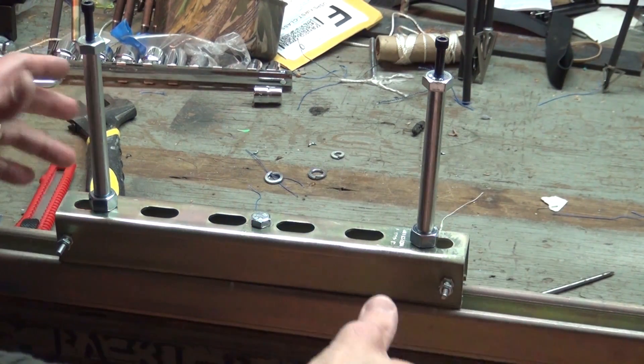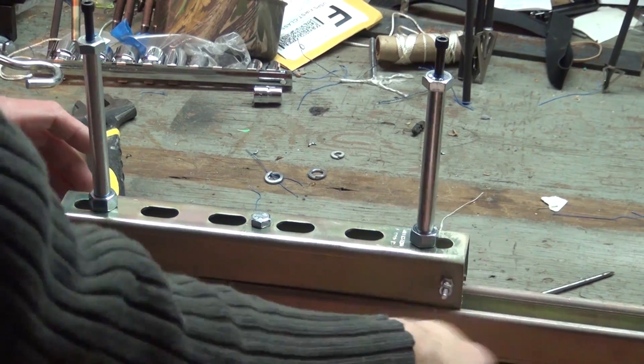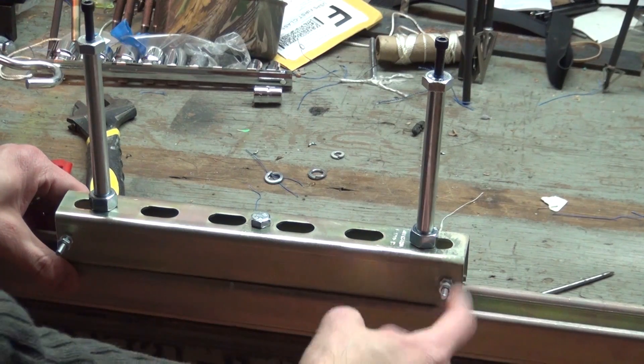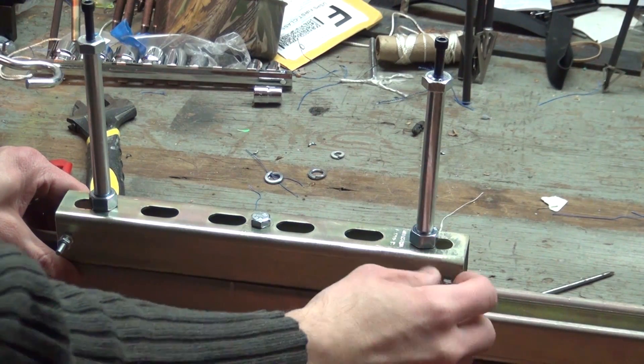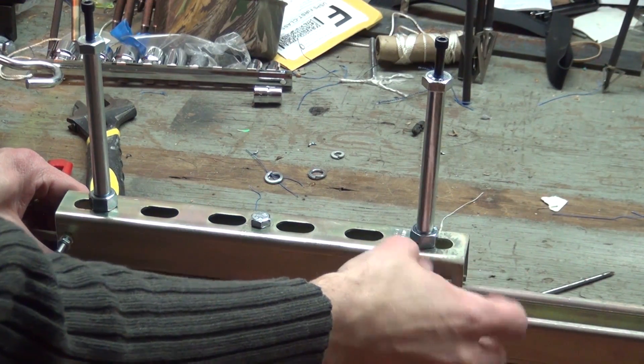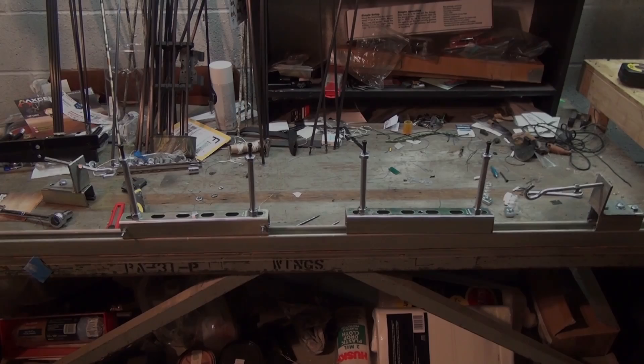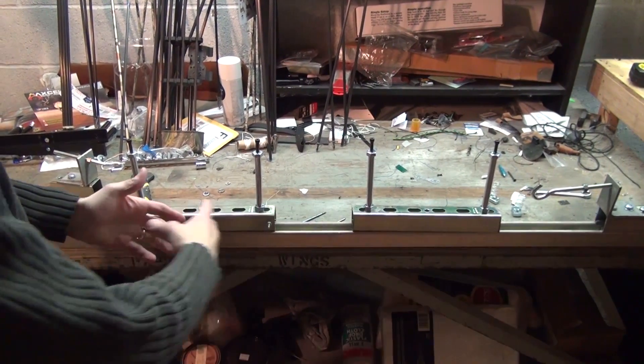I'll do a different video on how I'm making strings, but you wrap the string around here and then around the post, loop it around both ends, and you tighten down on the string so it can't slide out.